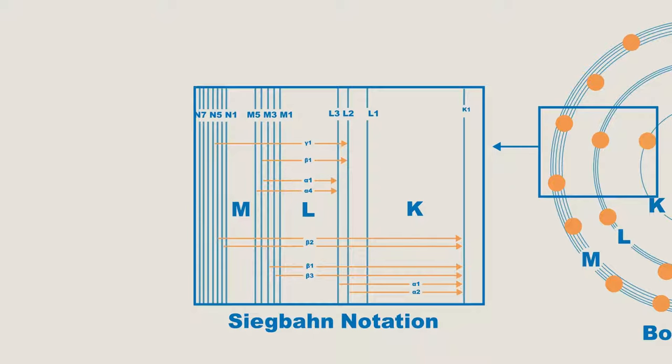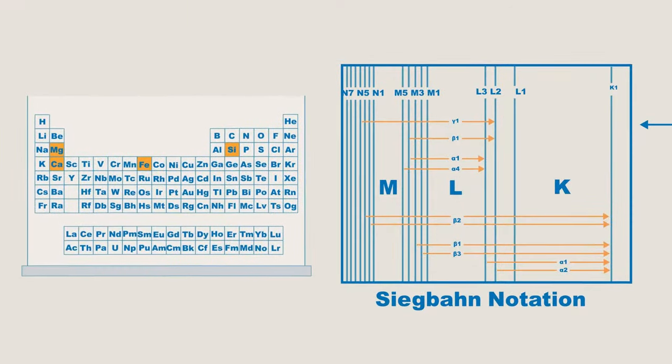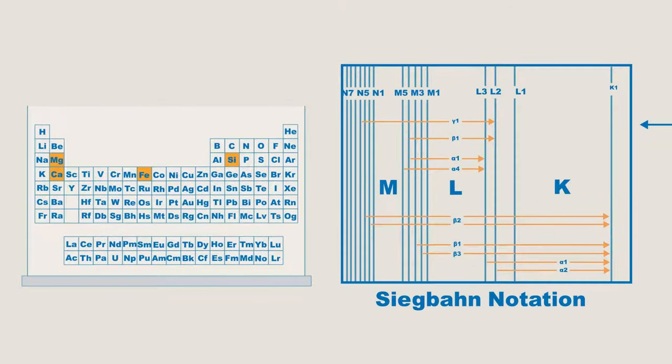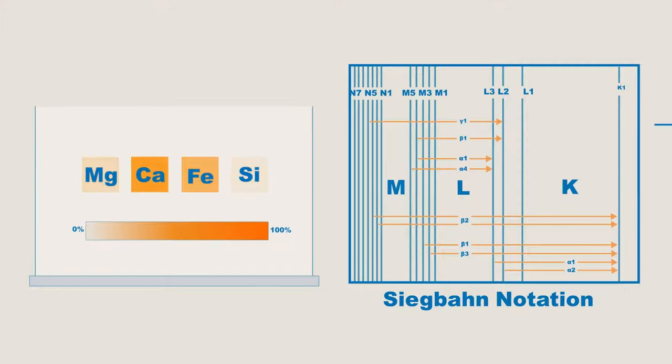So when you hear the characteristic lines of elements referred to as K-lines and L-lines, or K-alpha and K-beta, you now understand that it all refers back to these two models. By applying the Siegban notation, we stated earlier that XRF can not only determine which elements are in the material, but also determine the quantity.